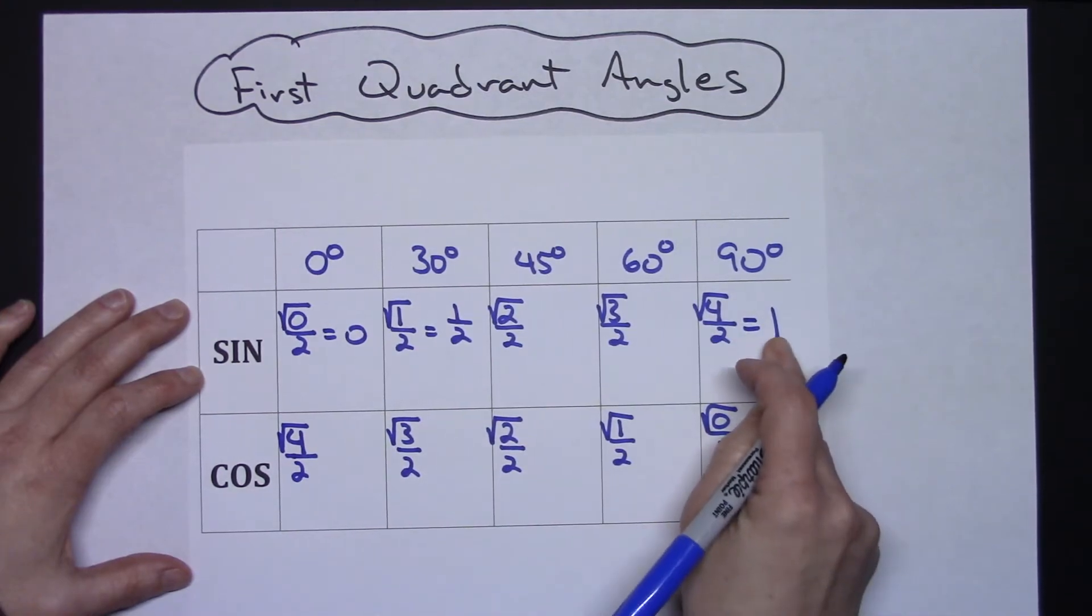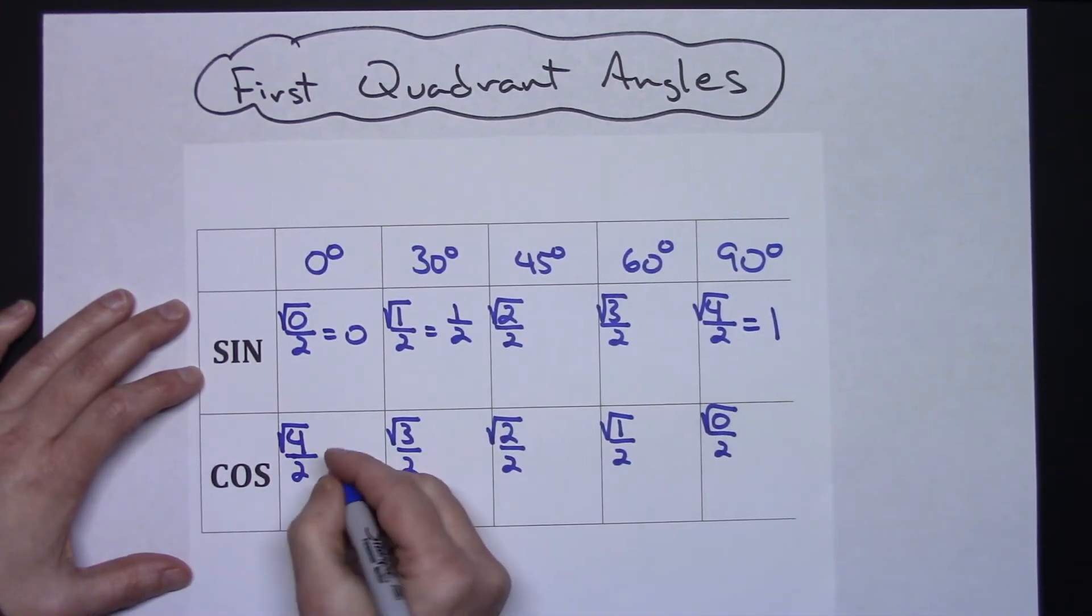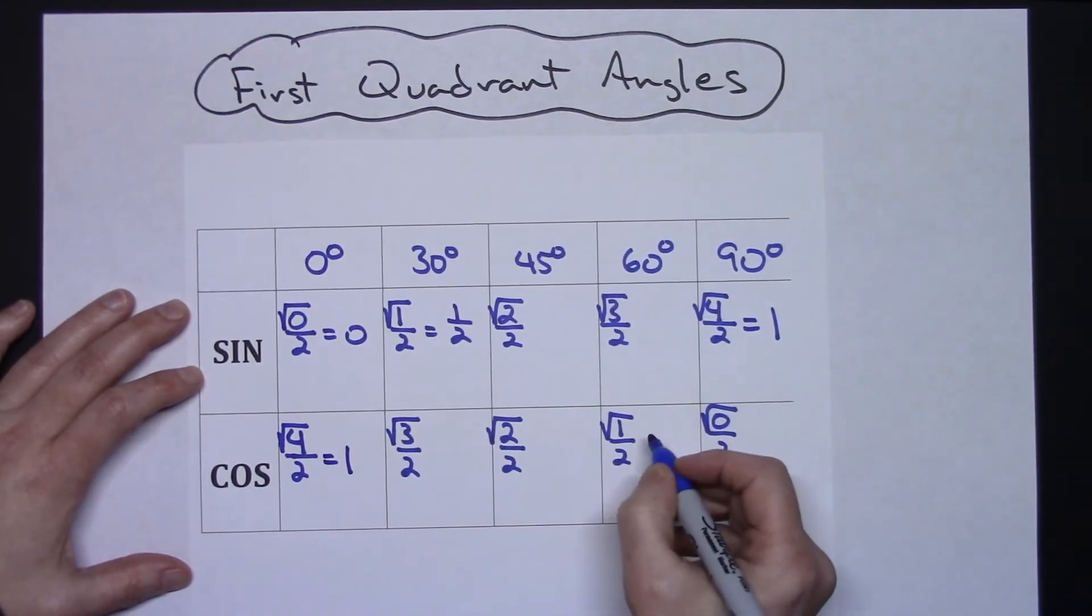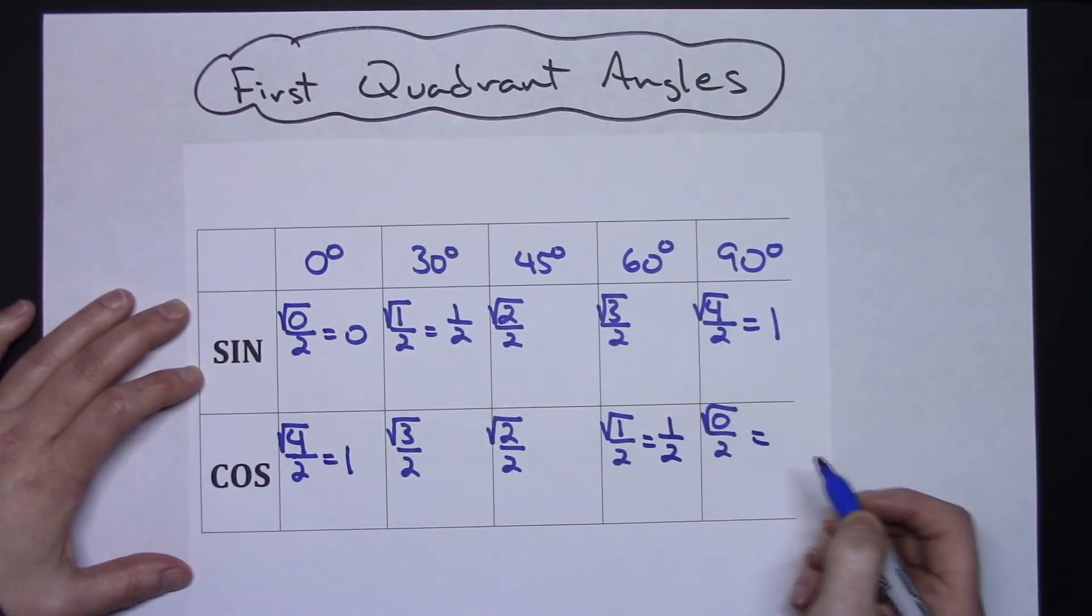The exact same thing on all of these works as well. So this is going to be two over two which simplifies to one. That cannot simplify. That cannot simplify. Square root of one is one, so this goes down to a half. And square root of zero divided by two then would be zero.